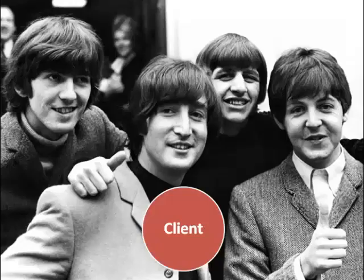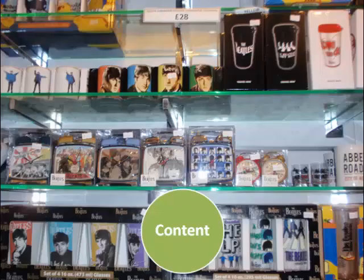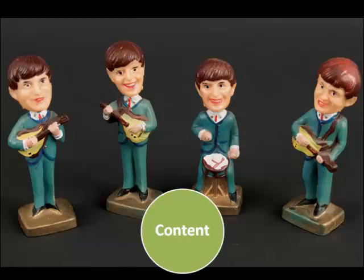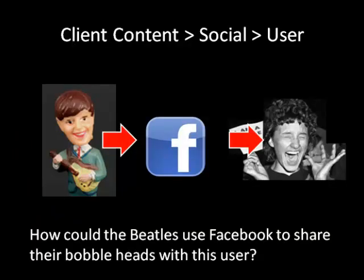Let's make this more realistic. While this course is a simulation, let's say your client was a well-known group — the Beatles. Who would our user be? Perhaps a Beatles fan. What could the content be? Maybe some Beatles merchandise, specifically some Beatles bobbleheads. So let's make those scenarios realistic. How could the Beatles use Facebook to share their bobbleheads with the user? That's an example of the client sharing content on social media, which eventually gets to the user. And remember, think of the legalities — who owns that content once it's posted on social media?